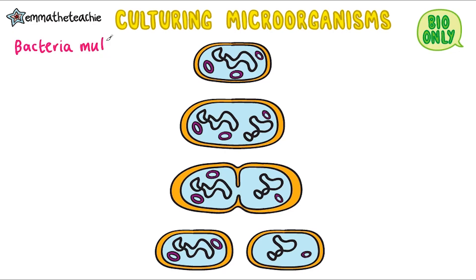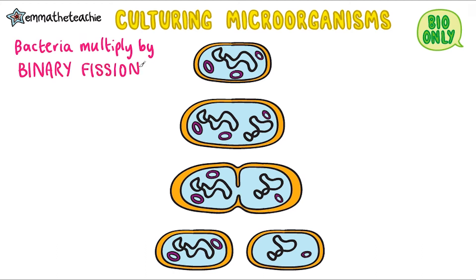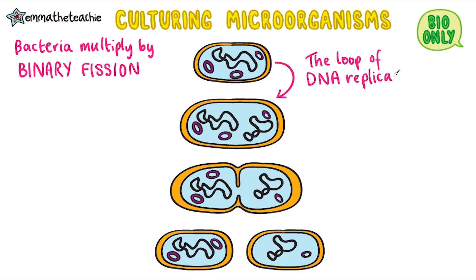Bacteria multiply by a type of simple cell division, which is called binary fission. It's very similar to normal cell division. First up, the genetic material replicates. In this case, it's a loop of DNA, as we're talking about bacteria.